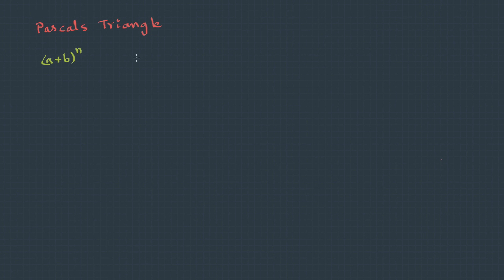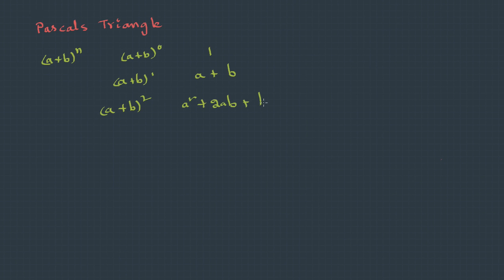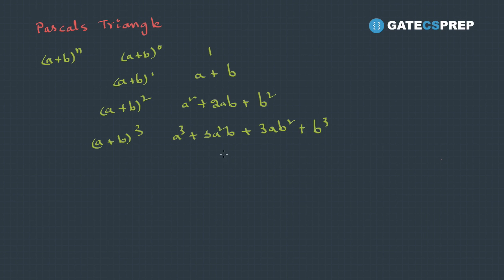Pascal's triangle: let's write the expansion of (a + b)^n for different values of n. (a + b)^0 = 1. (a + b)^1 = a + b. (a + b)^2 = a² + 2ab + b². (a + b)^3 = a³ + 3a²b + 3ab² + b³, and so on. Now, if you look at the coefficients in these expansions, there is a pattern.